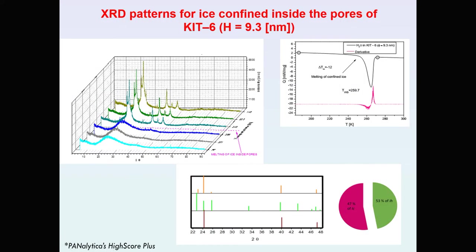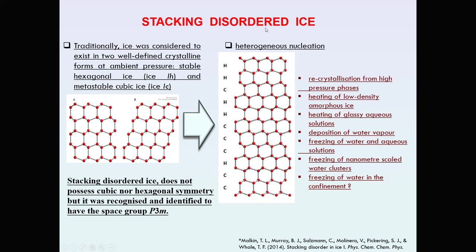Similar results were found for ice confined inside the pores of KIT6 with different pore sizes. Again, DSC scans show the melting temperature of substances inside the pore, and we observe diffraction peaks at temperatures lower than the melting point. We find that the ice observed using this method consists of cubic and hexagonal ice, but with different percentages.